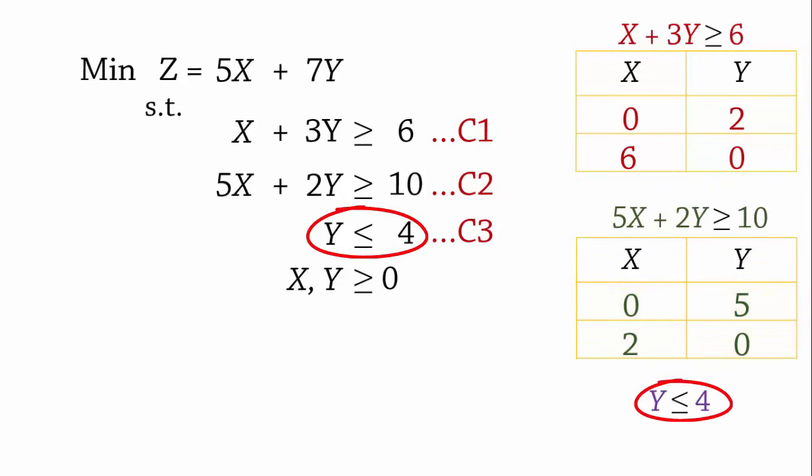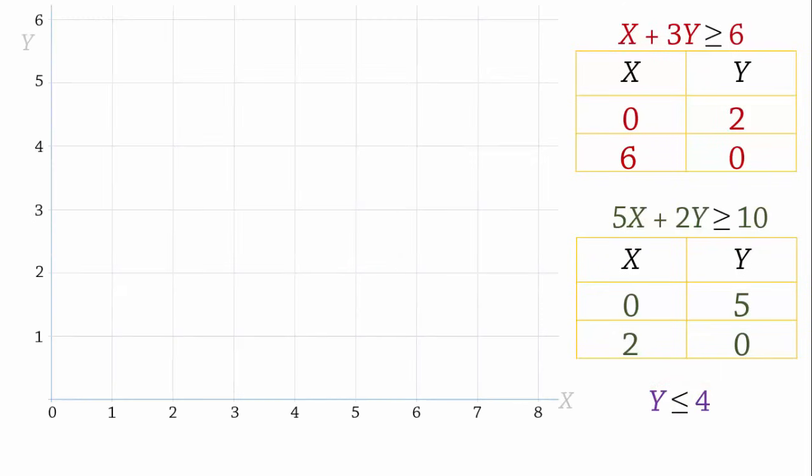For constraint 3, y is just always less than or equal to 4, irrespective of the value of x. In drawing the graph, note that the highest value of x is 6, and the highest value of y is 5. That tells us how far we need to go on the x and y axes. I went a little bit higher than 6 on the x axis and a little bit more than 5 on the y axis because I have the space.